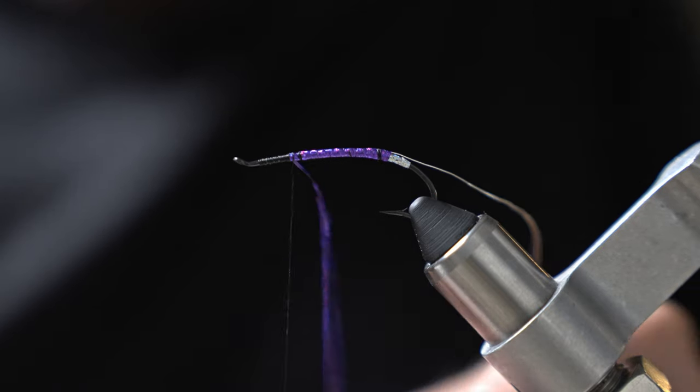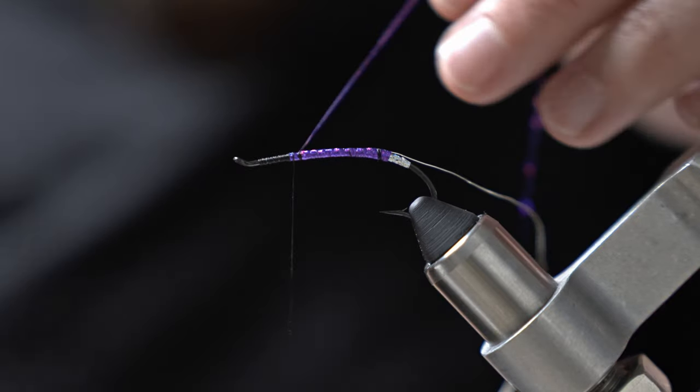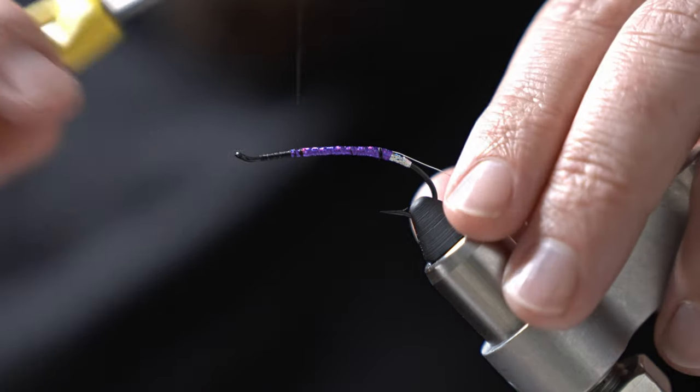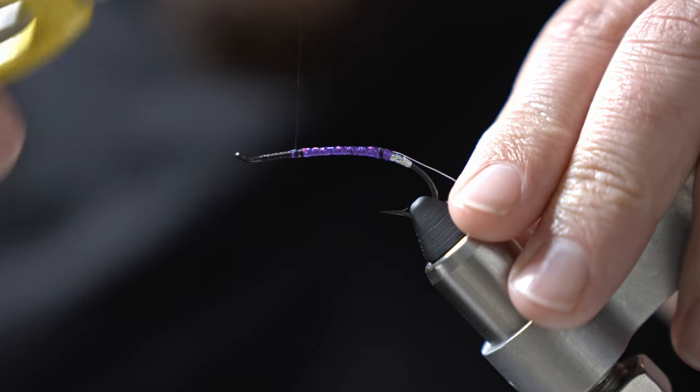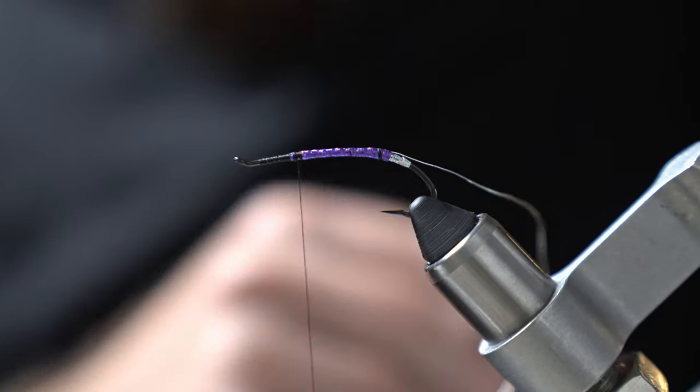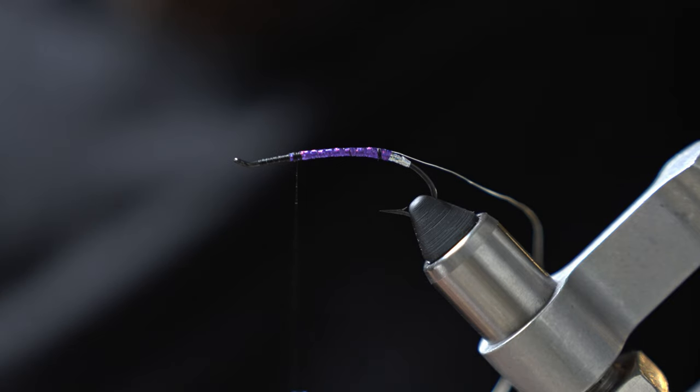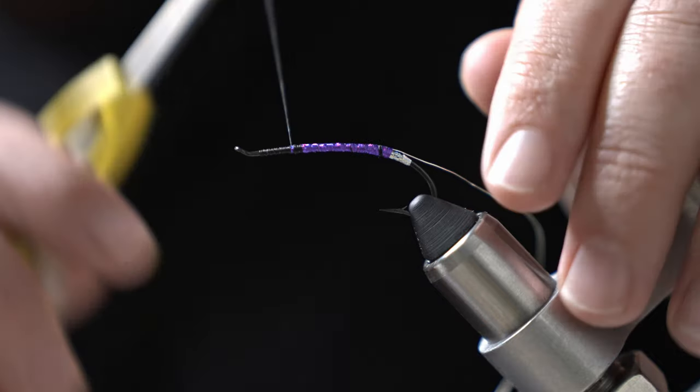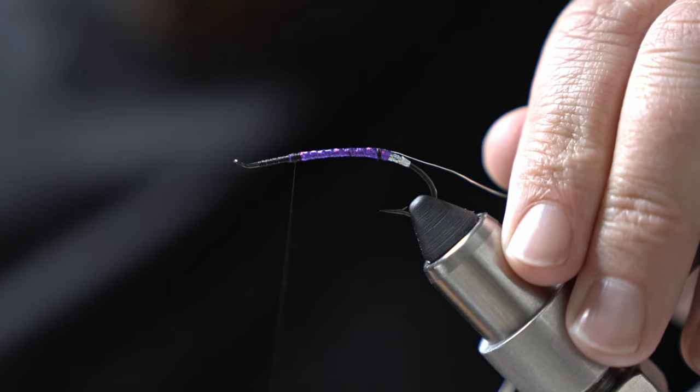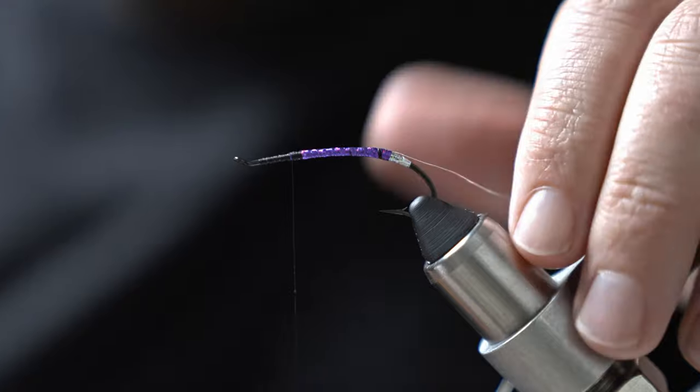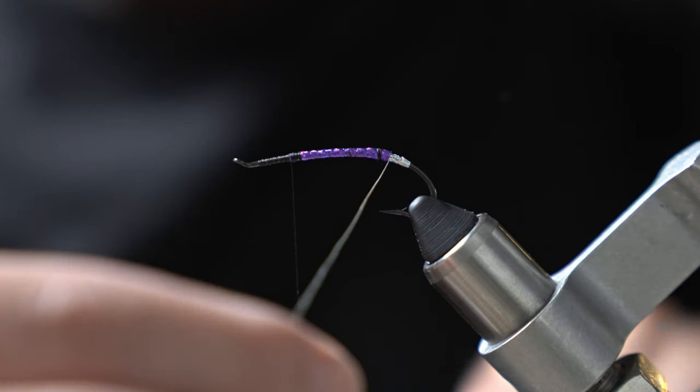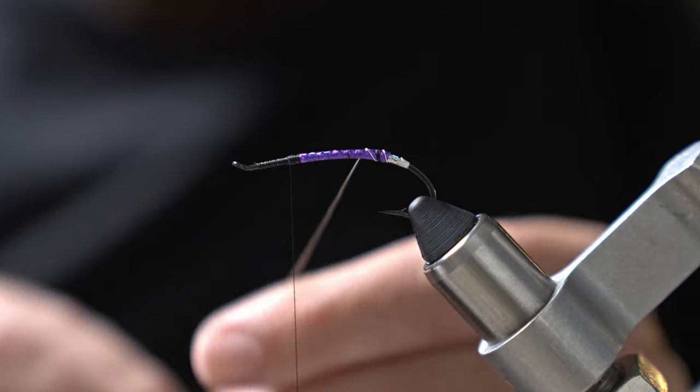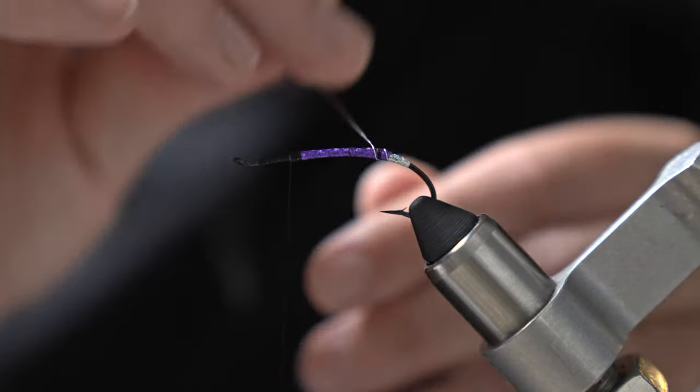Go ahead and tie that off. And I see a lot of tiers will, you know, on both the tag end tinsel and the body tinsel, at this point they'd add a little bit of UV resin or super glue or something to keep it secured. It definitely doesn't hurt if you're tying a fly that you're putting a lot of time into, certainly makes sense. This is going to be kind of a quick tie so I'm going to forego that.